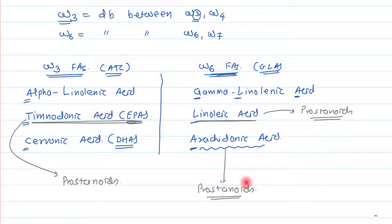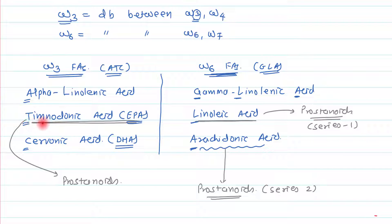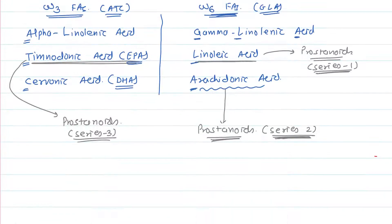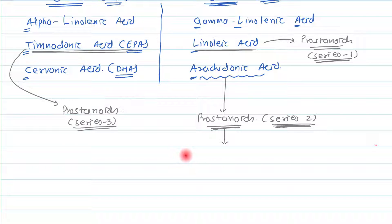The difference between prostanoids synthesized from different fatty acids lies in their series. Arachidonic acid synthesizes series-2 prostanoids, linoleic acid synthesizes series-1 prostanoids, and timodonic acid synthesizes series-3 prostanoids. All prostanoids have similar actions but different potency. Series-1 and series-2 prostanoids are highly potent mediators of inflammation and platelet aggregation.